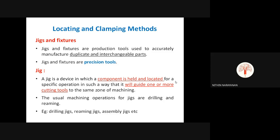Jigs and fixtures are production devices or production tools used to accurately manufacture, duplicate, and produce interchangeable parts. If you want mass production of accurate or interchangeable parts, you use these devices. They are precision tools. By holding, clamping, or locating the workpiece using jigs and fixtures, we can perform precise operations and achieve the required dimensional accuracy on the final product.